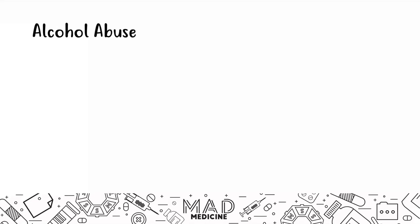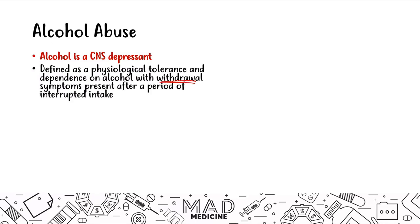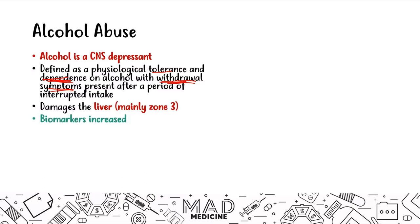This is a general overview of the previous video. Alcohol is a CNS depressant, and alcohol abuse is defined by someone having a physiologic tolerance and dependence on alcohol. Without alcohol, withdrawal symptoms will be present. The tolerance, dependence, and withdrawal symptoms are the key defining factors of alcohol abuse. Alcohol damages zone 3 of the liver around the central vein, and biomarkers in alcohol abuse are definitely going to be increased.